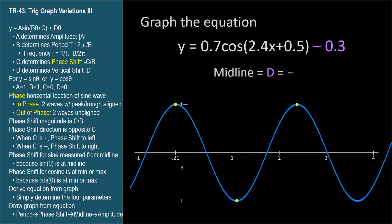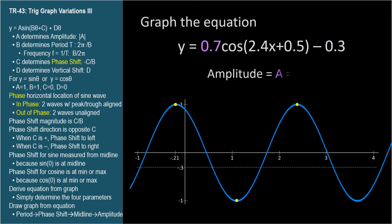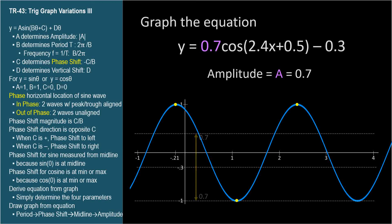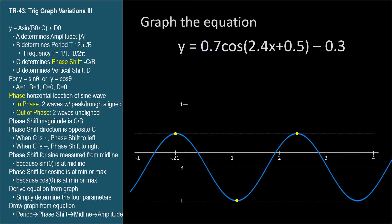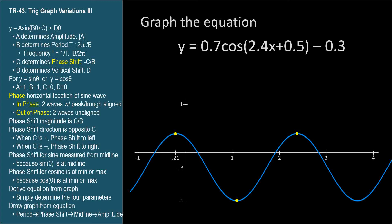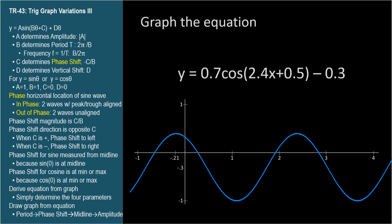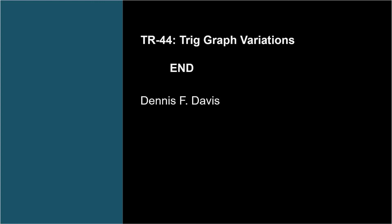The midline is the d parameter, negative 0.3, and the amplitude is 0.7. So we slide the graph down and compress it. This is the graph of y equals 0.7 cosine of 2.4x plus 0.5 minus 0.3. It's easier to figure out the equation for a graph than to draw the graph of an equation, but that's only because there's so much erasing and redrawing on paper. Practice with pencil and paper until it becomes easy.